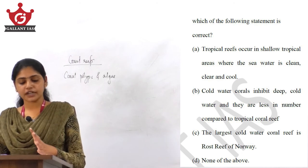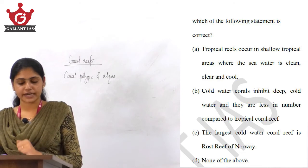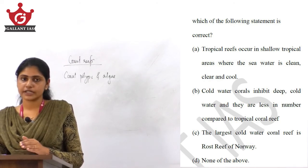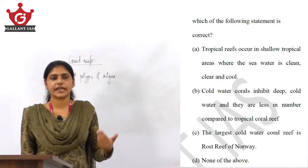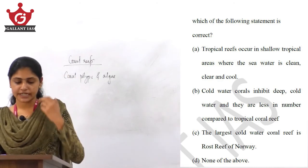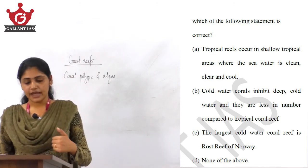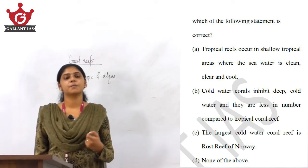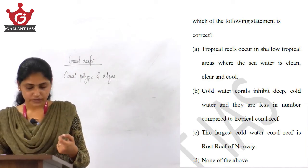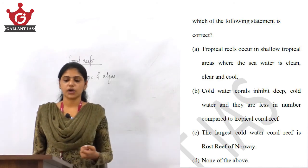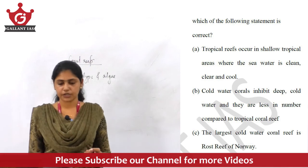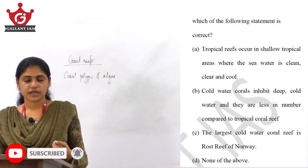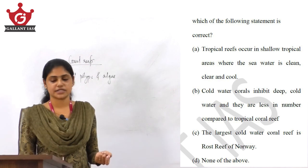Statement A says tropical reefs occur in shallow tropical areas where sea water is clean, clear, and cool — but it should be warm, not cool, so option A is wrong. Statement B says cold water corals are less in number compared to tropical coral reefs — but according to UNEP, cold water corals are actually more in number, so B is also wrong. Statement C about the largest cold water coral reef being Rost reef is correct. Therefore, C is the answer.